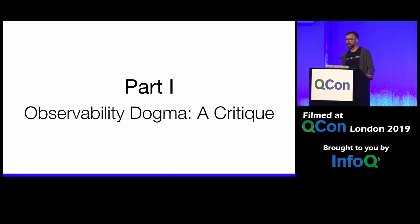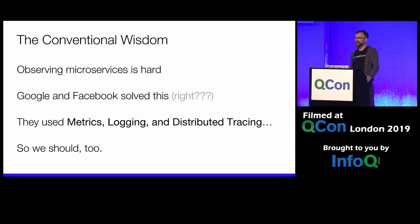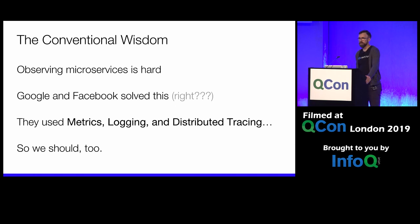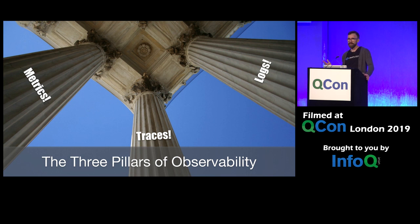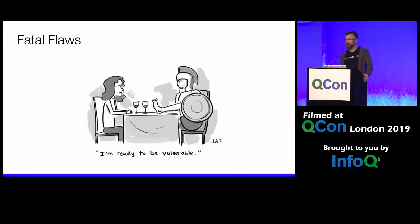The conventional wisdom: it's difficult to observe microservices — anyone who's running them has probably run into this. Google and Facebook solved this, and among other things they had metrics, logs, and distributed tracing. So we should too. This is often referred to as the three pillars of observability — these three things hold up your observability scaffolding and everything is fine. So this is not reasonable.